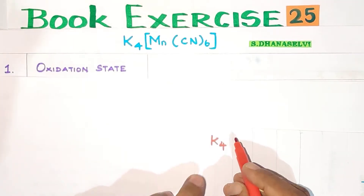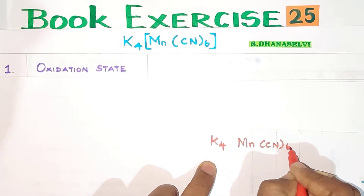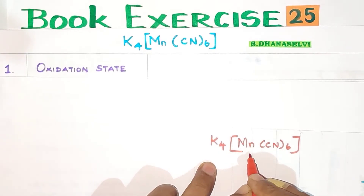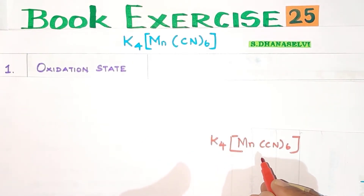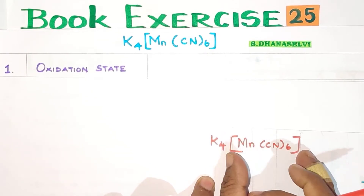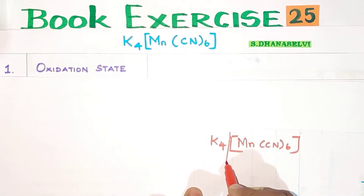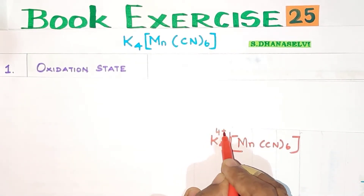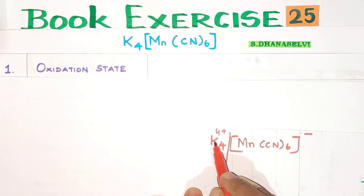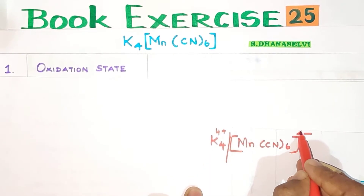The compound formula is K4Mn(CN)6. To find the oxidation state of the central metal ion, we look at the complex ion charge. We know there are 4 K+ ions, so the complex ion carries a 4- charge. That gives us the overall charge of the complex ion as 4 minus.